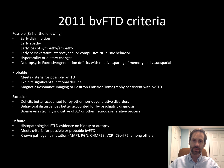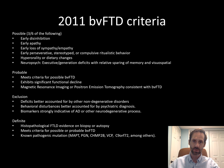If someone has three out of six of these constellation of symptoms, we say that they meet criteria for possible BVFTD. To meet criteria for probable BVFTD, we like to have some imaging such as an MRI or PET scan that shows a disproportionate problem in the frontal and temporal lobes. A definite diagnosis usually takes an autopsy or biopsy, or a situation in which somebody has a known genetic mutation that can cause frontotemporal degeneration.